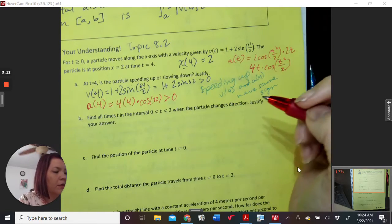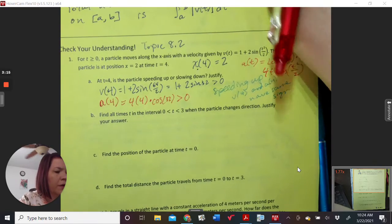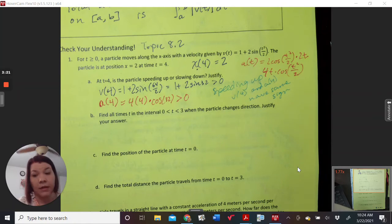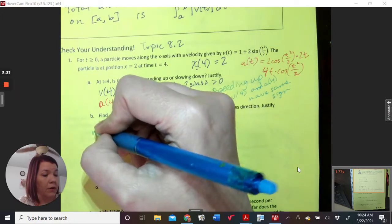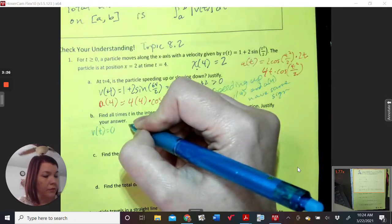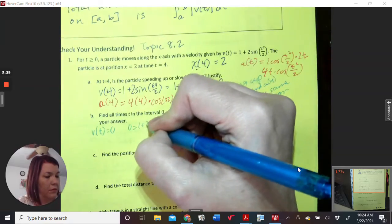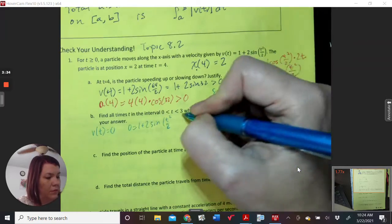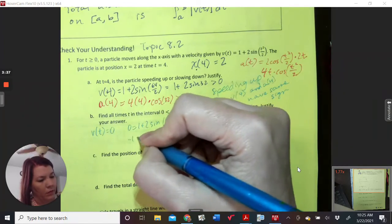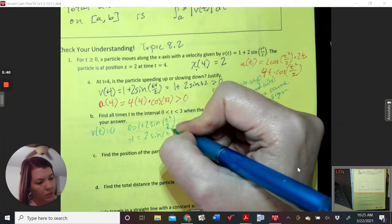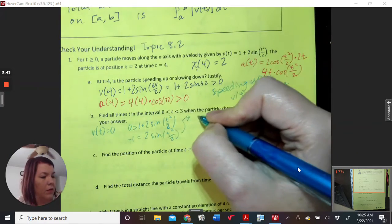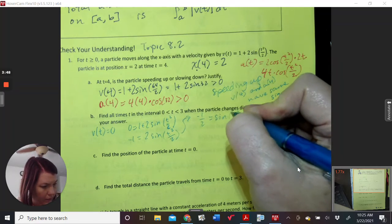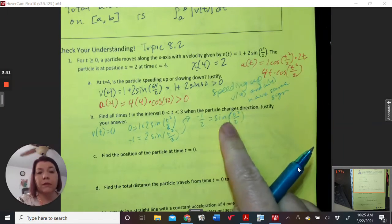Find all the times in the interval when the particle changes directions. So the particle changes directions when the velocity is equal to zero, and the sign changes. So I need to know v of t equals zero. So negative 1 half equals the sine of a mess.